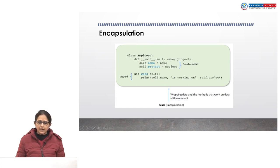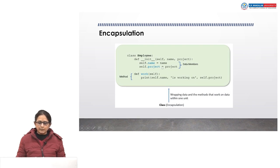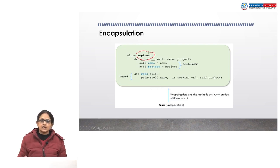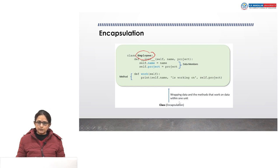In this diagram you can see how a class is used to implement encapsulation. Here we have created a class employee. We have the init method — def __init__ — with the self parameter followed by other parameters. The first parameter is always self, then we can specify the list of parameters required. Here the program has two data members, name and project, and one method def work taking the self parameter. These data members and methods are encapsulated in a single unit, which is this class employee — wrapping data and methods into a single unit. This is how we implement encapsulation using classes in Python.